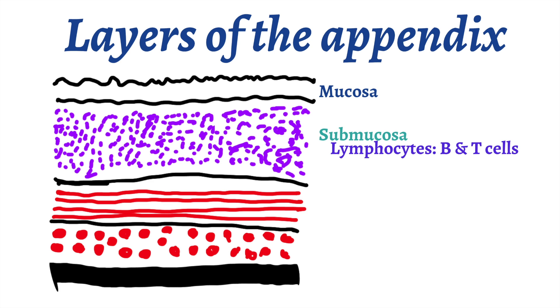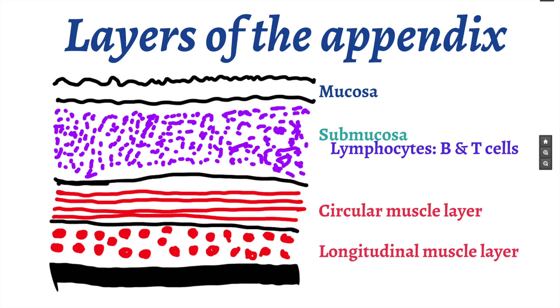Below the submucosa is the muscularis propria, which consists of an inner circular smooth muscle layer and an outer longitudinal smooth muscle layer. Lastly, there is a thin serosal layer that covers the external portion of the appendix.